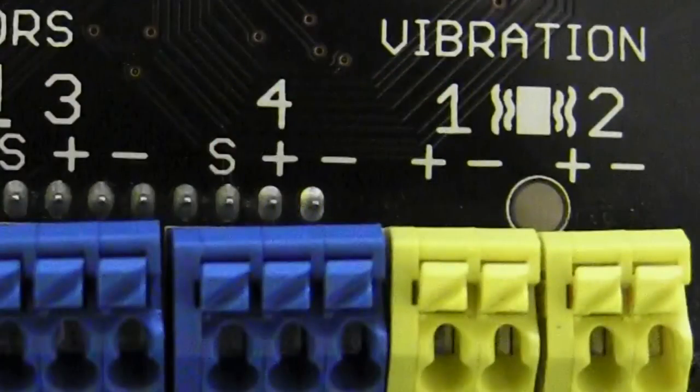Okay, now we can start on vibration motors. There are two vibration motor ports on the board colored in yellow.